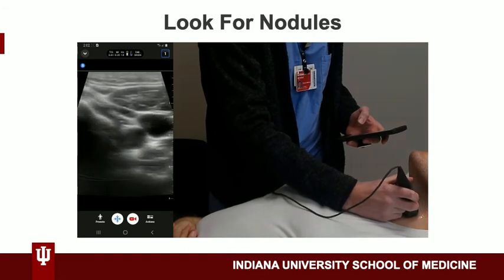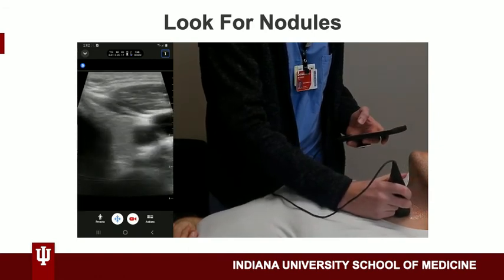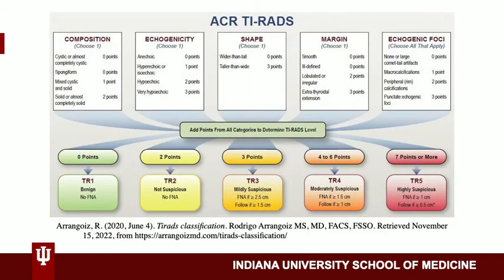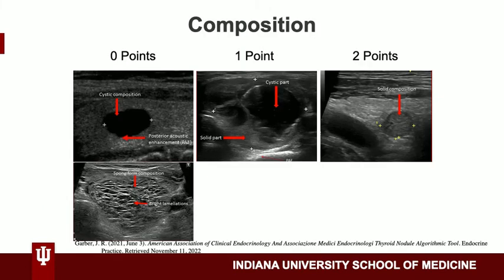As you scan you might encounter a nodule. They are often benign, but it is important to measure it and evaluate it using the TIRADS scoring system. TIRADS is a tool developed by the American College of Radiology used to evaluate a thyroid nodule using a scoring system based on five different criteria. After the score is calculated, you can determine the next best step in management.